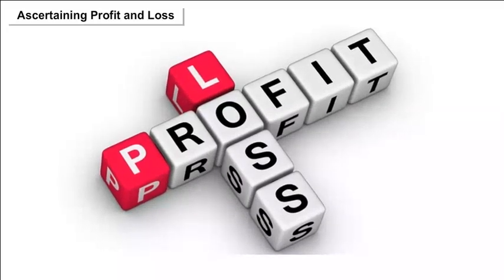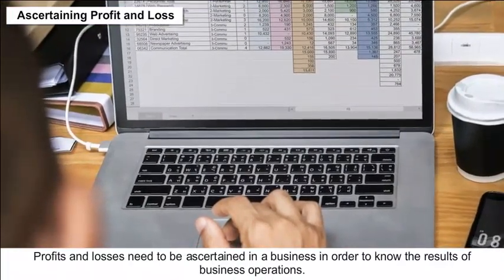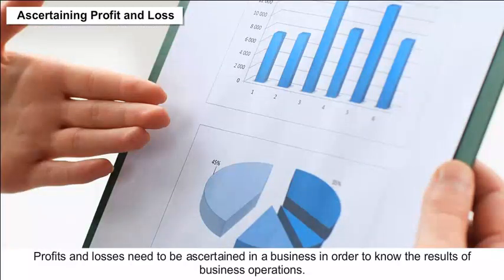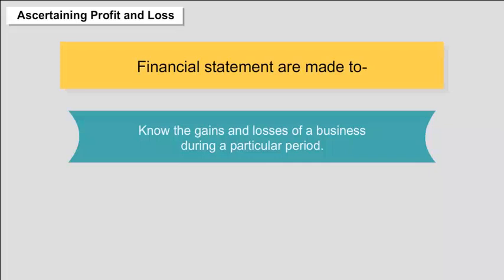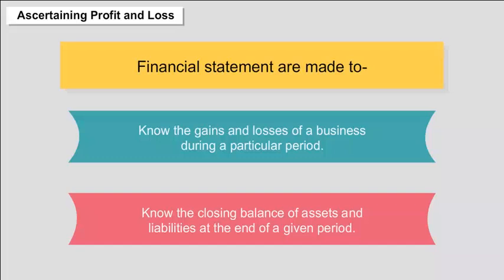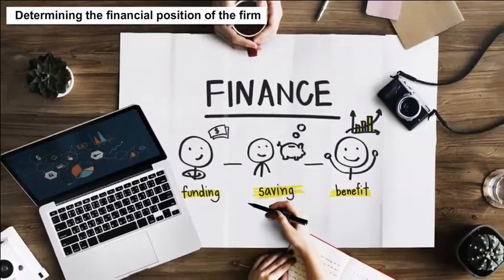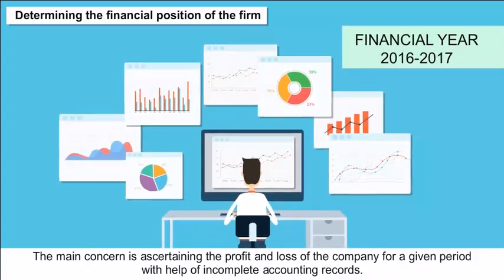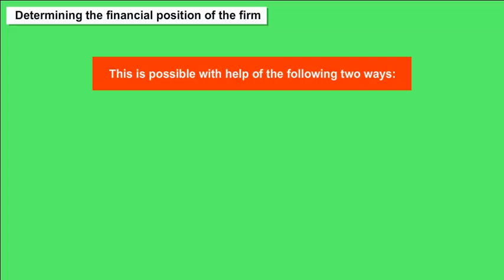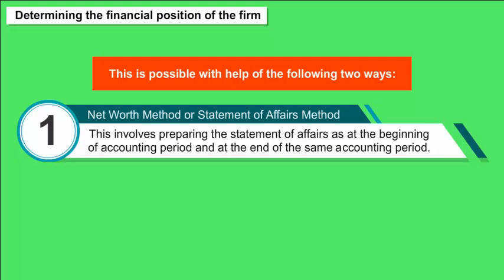Profit and losses need to be ascertained in a business in order to know the results of business operations. Financial statements are made to know the gains and losses during a particular period and the closing balance of assets and liabilities at the end of a given period. There are two methods: (1) the Net Worth Method or Statement of Affairs Method, which involves preparing the statement of affairs at the beginning and end of the accounting period.